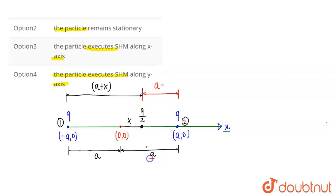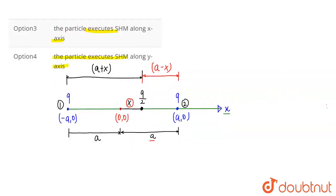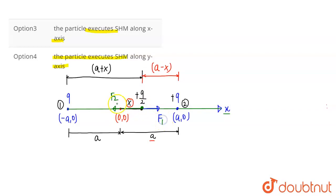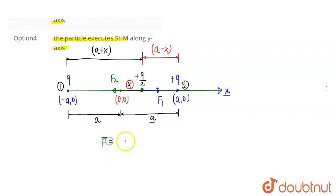Initially when the charge Q/2 was at the origin, its distance from each fixed charge was A. After displacing it by X, the distance from the second charge (at plus A) becomes A minus X. Since both fixed charges are positive and the middle charge Q/2 is also positive, repulsive forces act on it. Force F1 acts due to the charge at minus A, and force F2 acts in the opposite direction due to the charge at plus A.